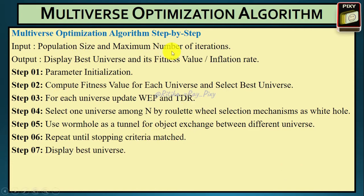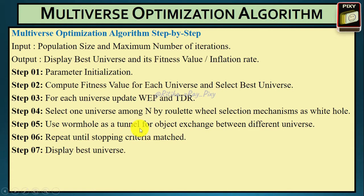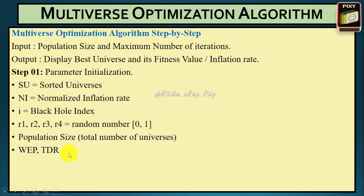The simple Multiverse Optimization Algorithm takes population size and maximum number of iterations as input, and outputs the best universe and its fitness value (inflation rate). In step one, we initialize all important parameters. Then we compute the fitness value for each universe and select the best. For each universe we update the wormhole existence probability and traveling distance rate. Then we select one universe among N using the roulette wheel mechanism, and in step five we use the wormhole as a channel for object exchange. We repeat this loop until the stopping criteria is met — when the current iteration equals or exceeds the maximum iteration.